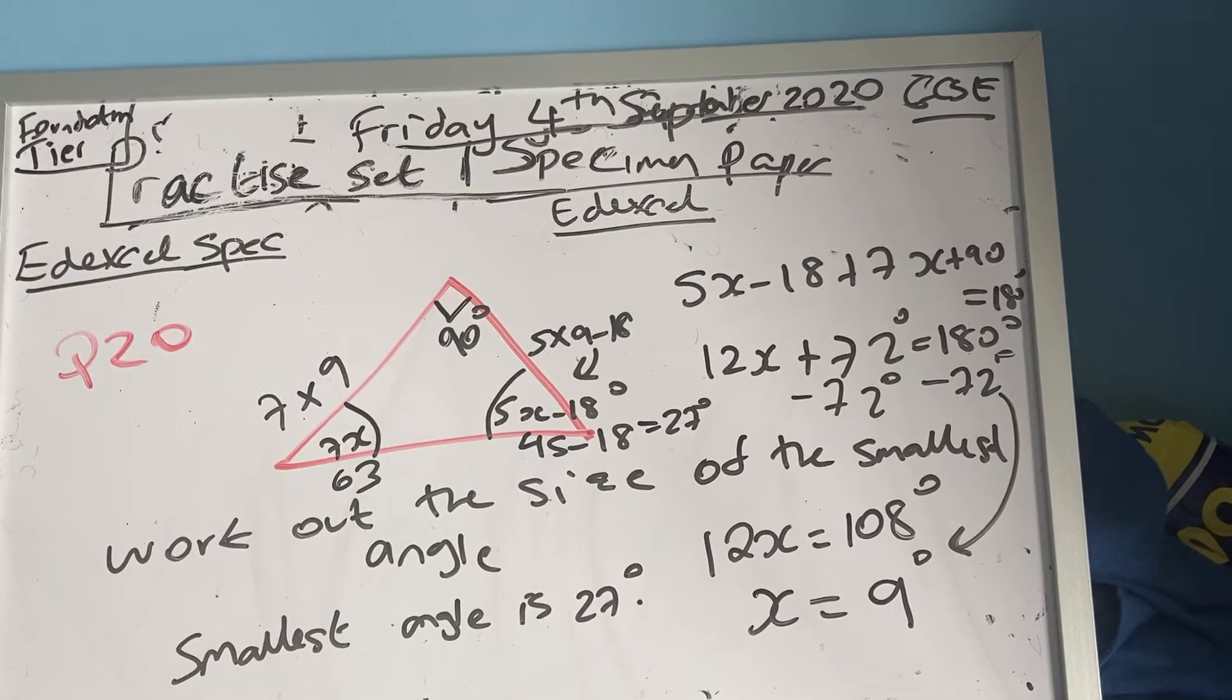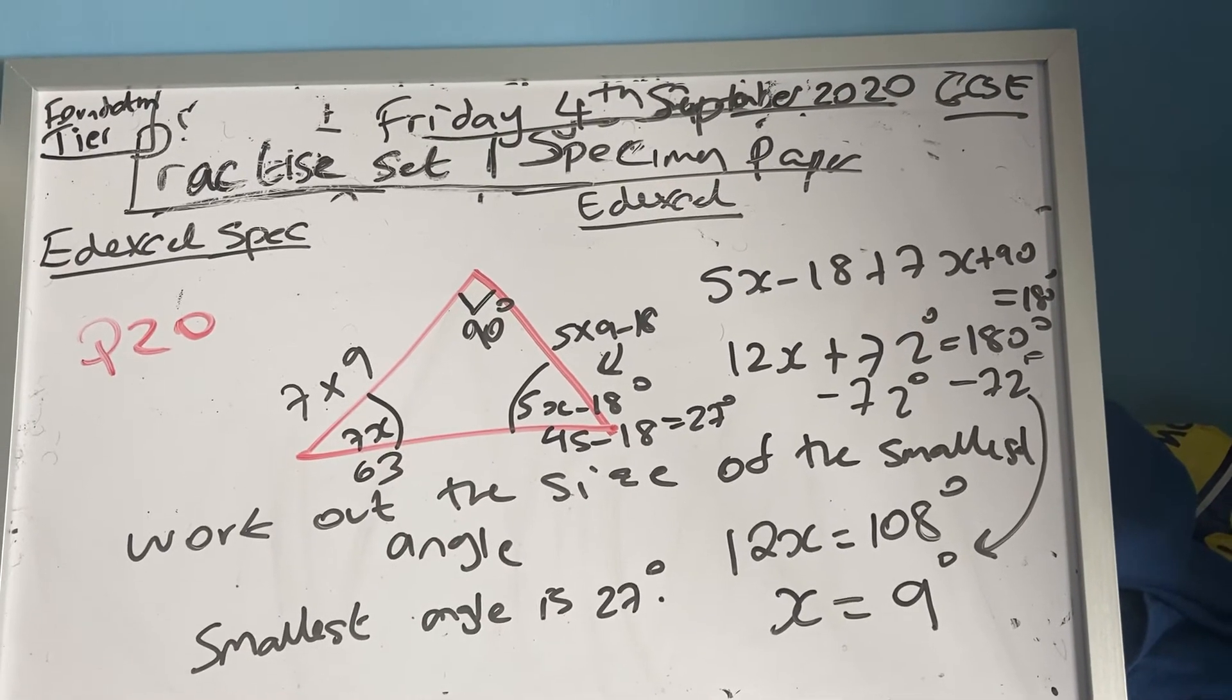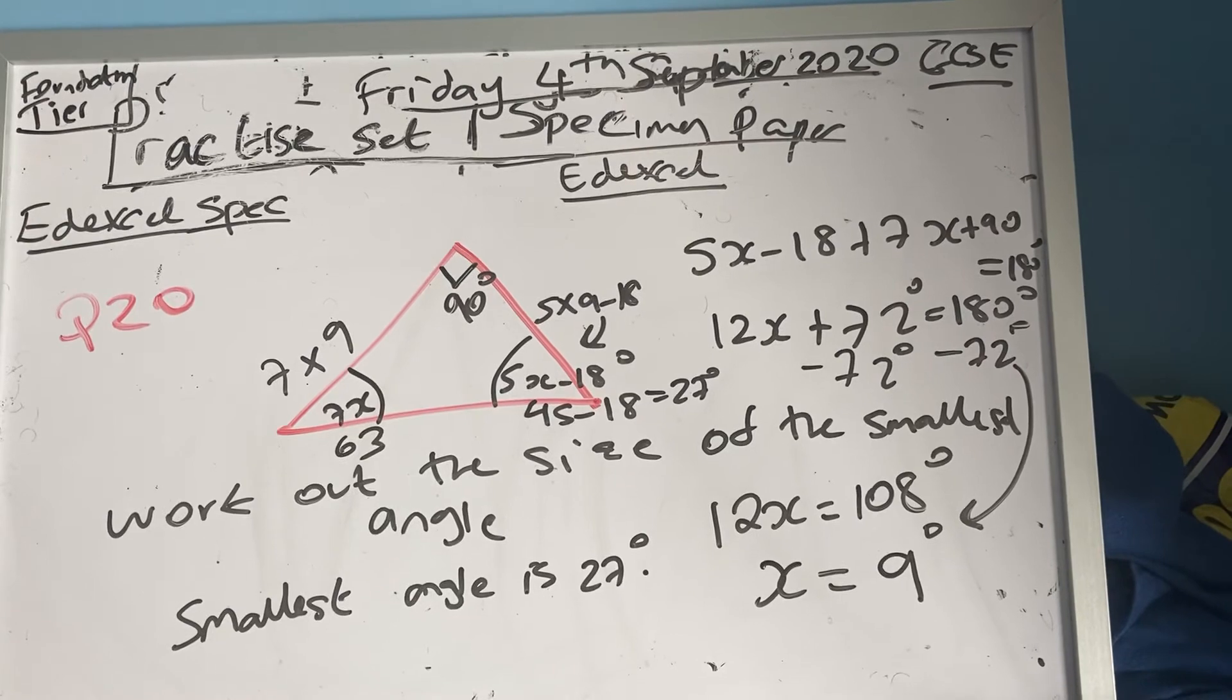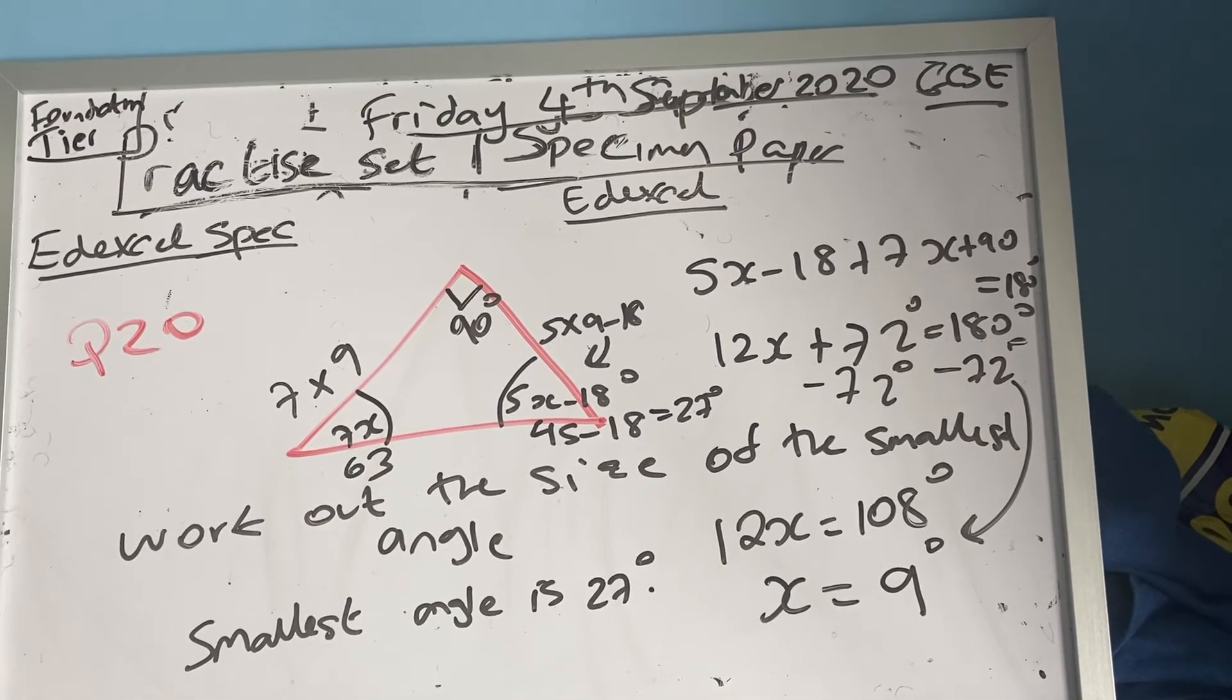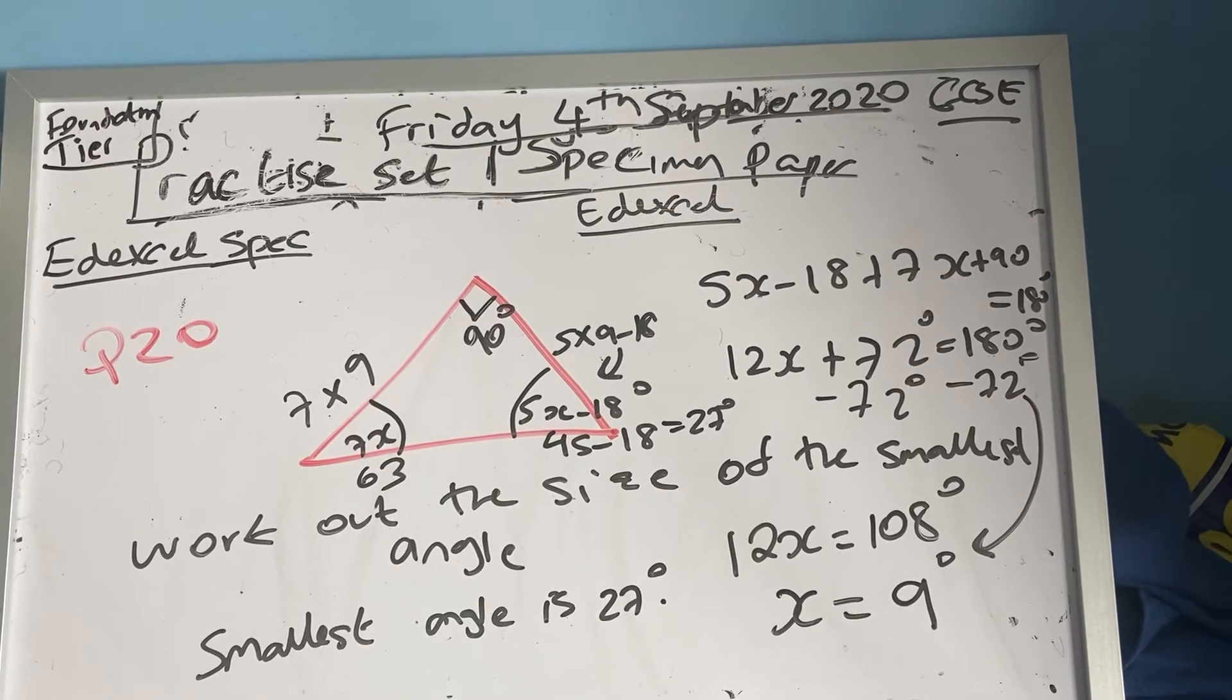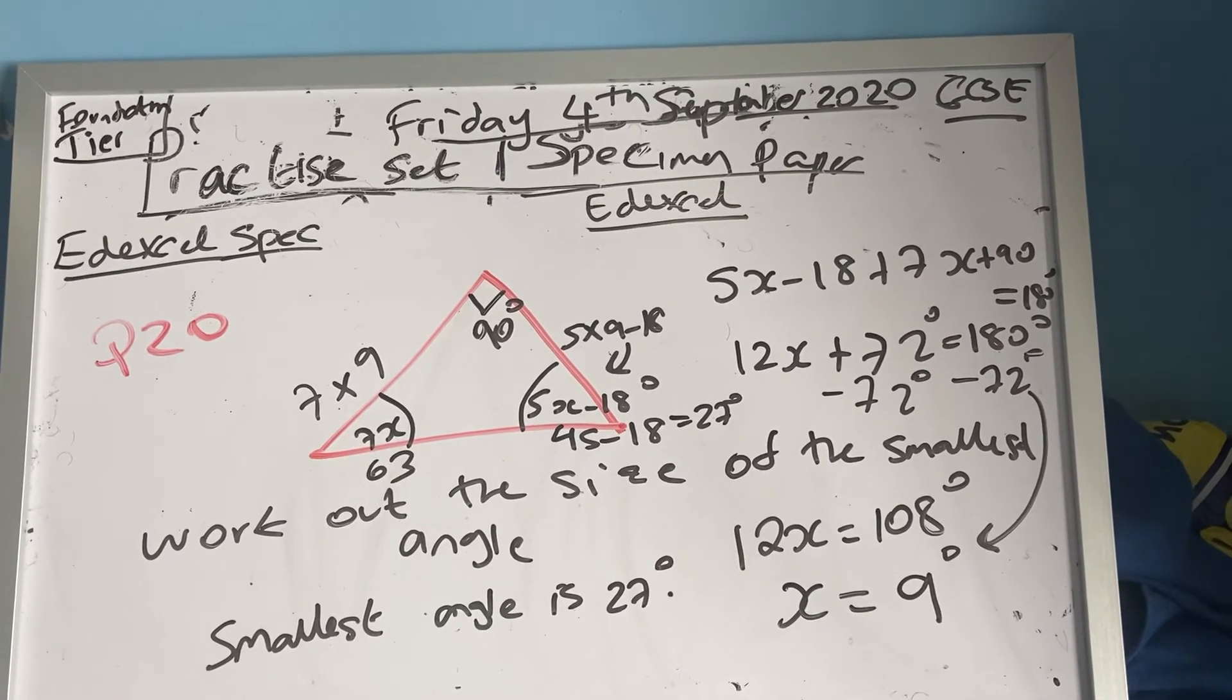by 12, I get x equal to 9. I then substitute x equals 9 into 7x and 5x minus 18 to figure out which is the smallest angle.